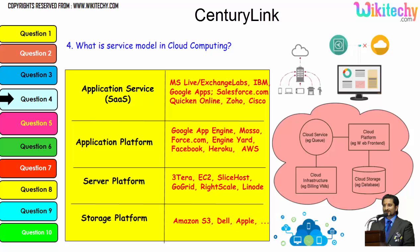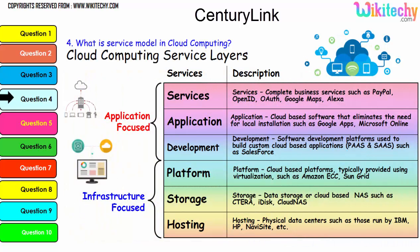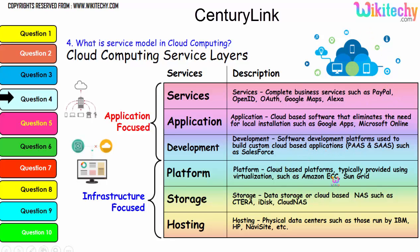Looking further at the service model, the typical examples are: application service, application platform, server platform, and storage platform provided by Amazon S3, Dell, and Apple. The important service layers are services, application development, platform, storage, and hosting, with various typical examples under each of these services.